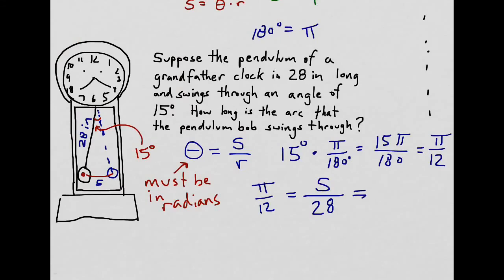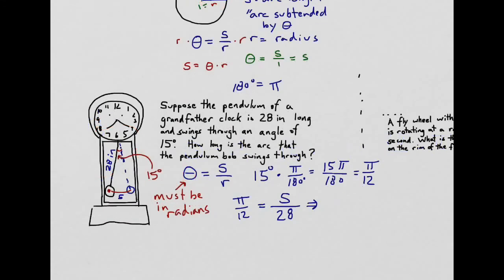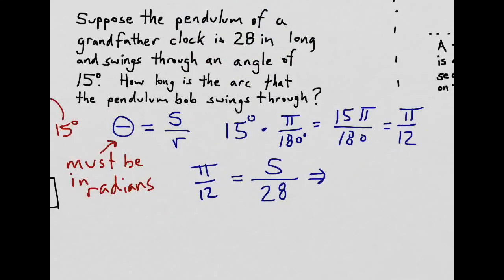And so we can solve this equation. If I multiply 28 to the other side, I get that s equals 28 pi over 12.